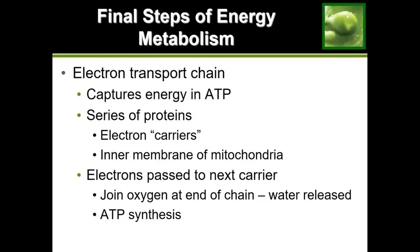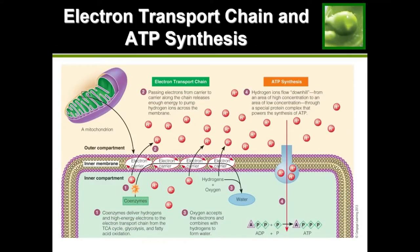The electron transport chain actually occurs in the inner membrane of the mitochondria. What's happening is those coenzymes that were collecting all of the hydrogens and electrons are going to come dump them into the electron transport chain — in particular into the inner compartment.